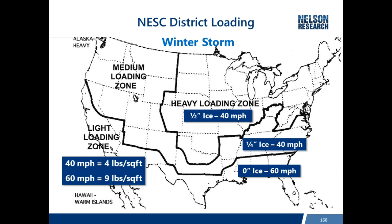For reference, a 40 mile-per-hour wind produces four pounds per square foot of area, while a 60 mile-per-hour wind produces nine pounds per square foot. As wind speed increases, force increases by the square of the speed — so even a 50 percent increase in wind speed, from 40 to 60 mph, equates to more than doubling the force on the poles.